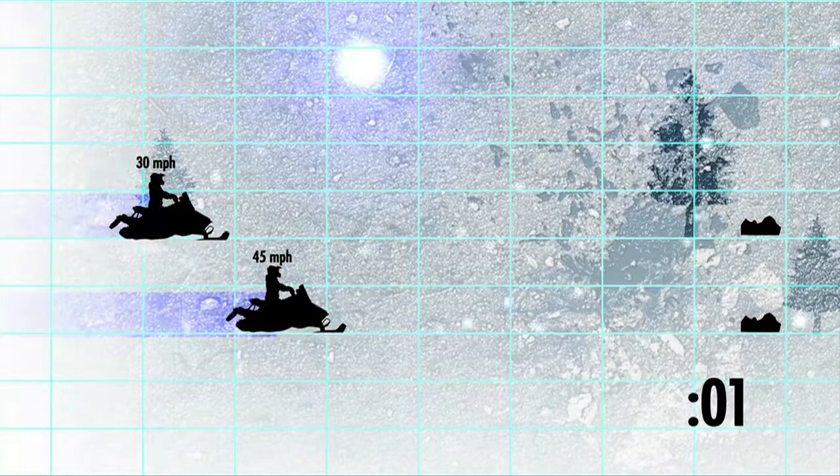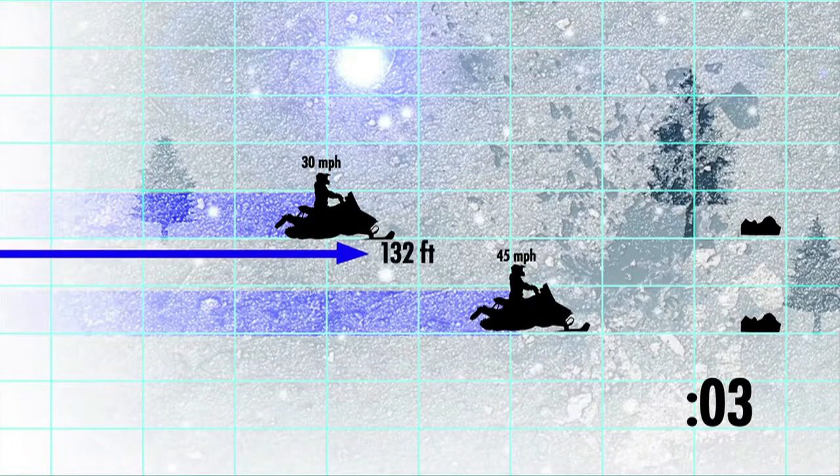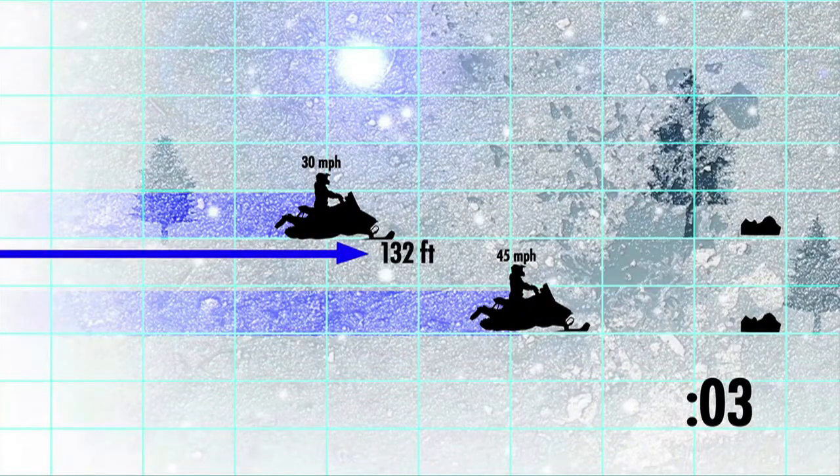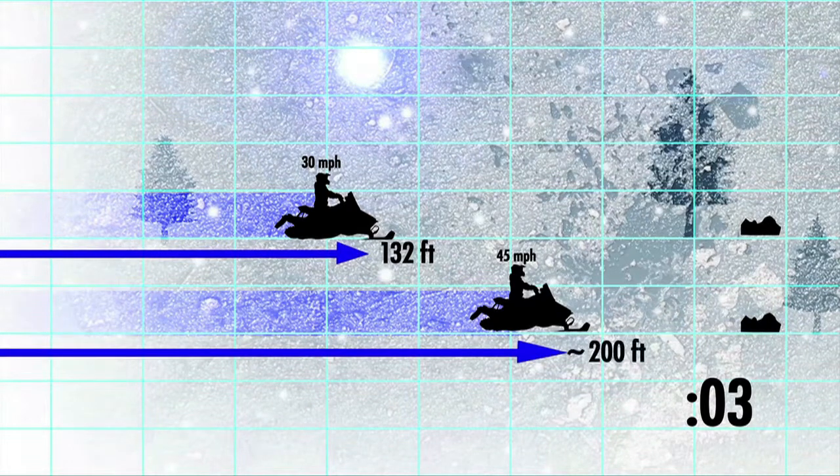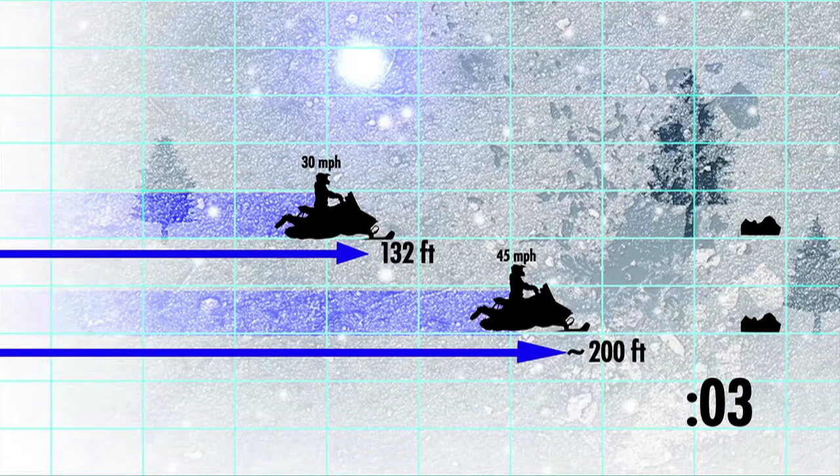If you're traveling 30 miles per hour, you just traveled 132 feet. If you were going 45 miles per hour, your reaction time distance would be almost 200 feet.